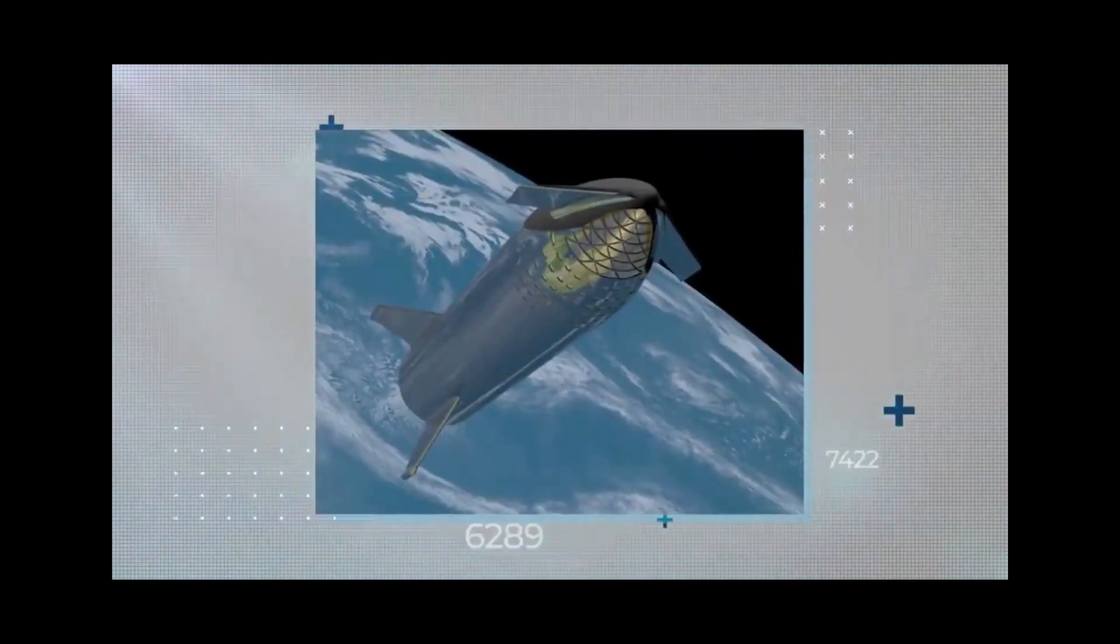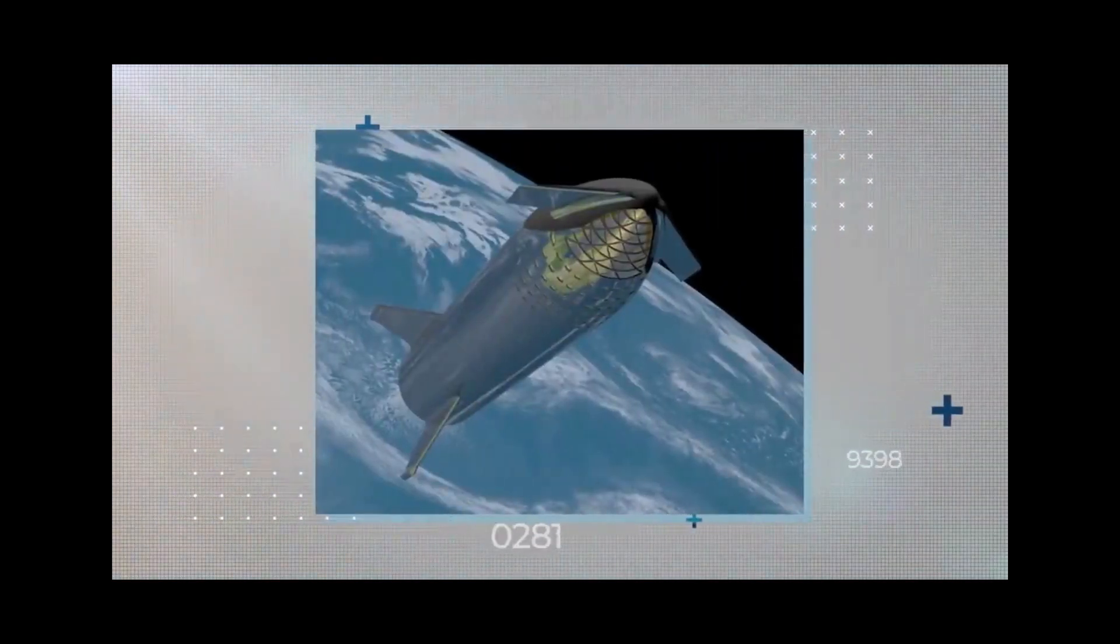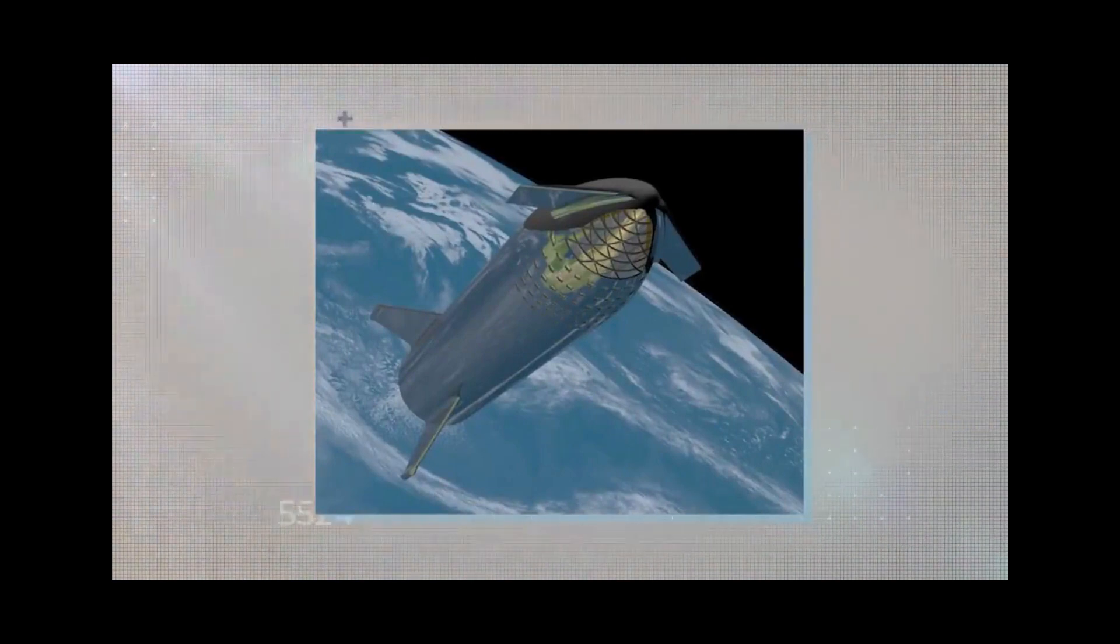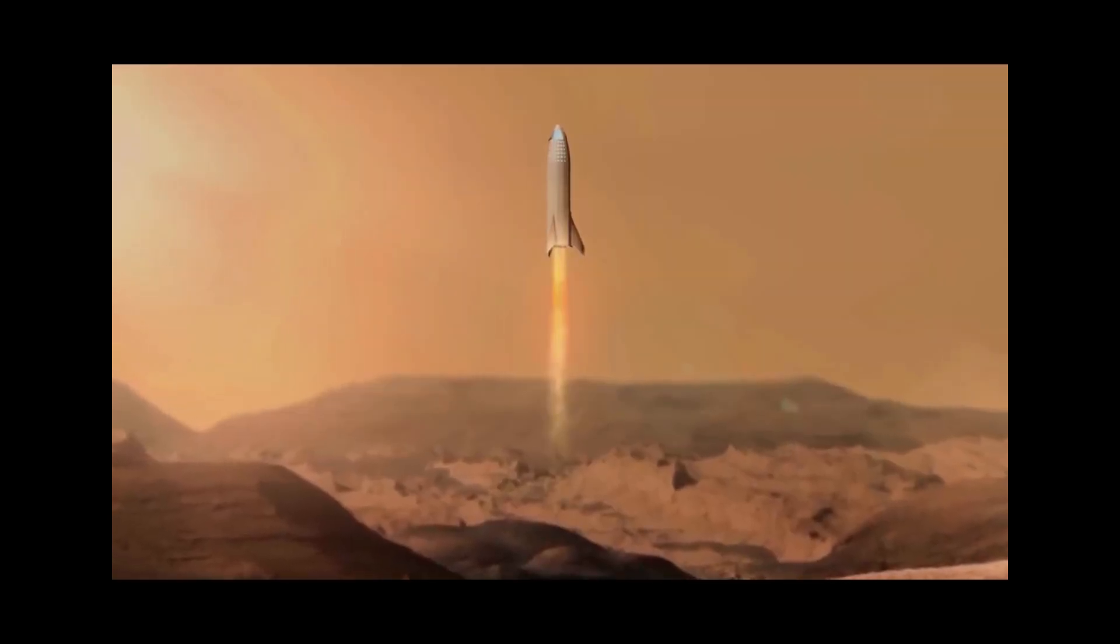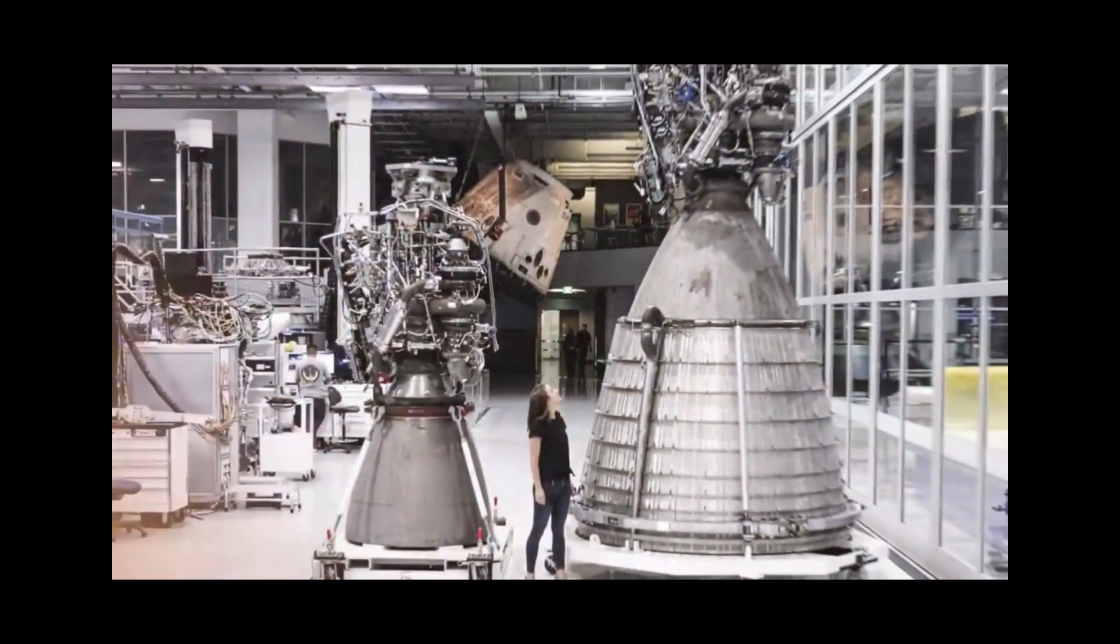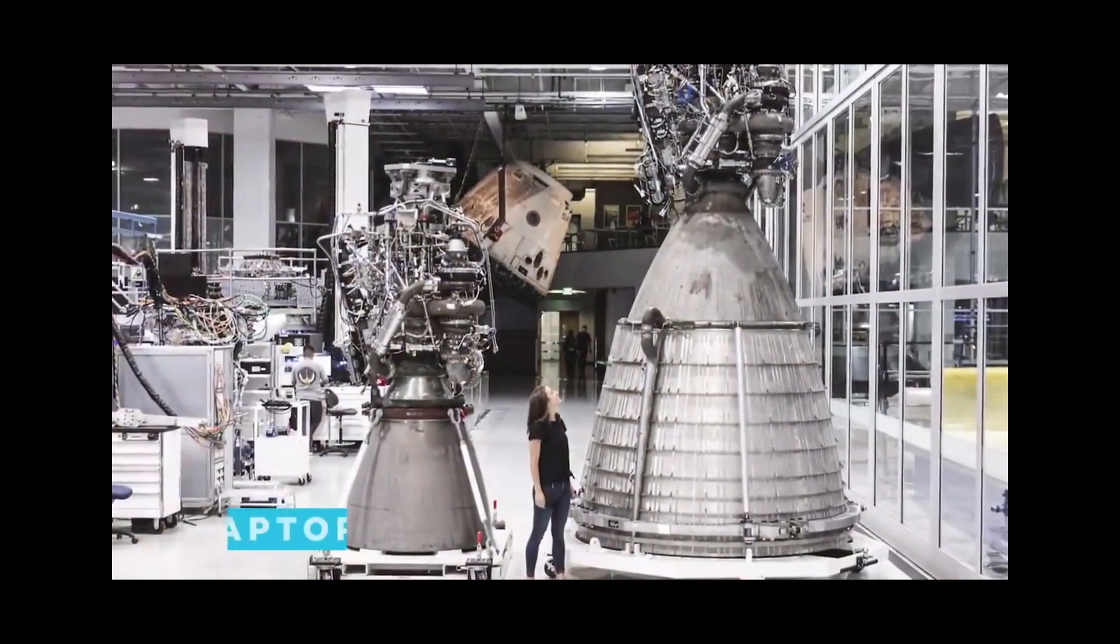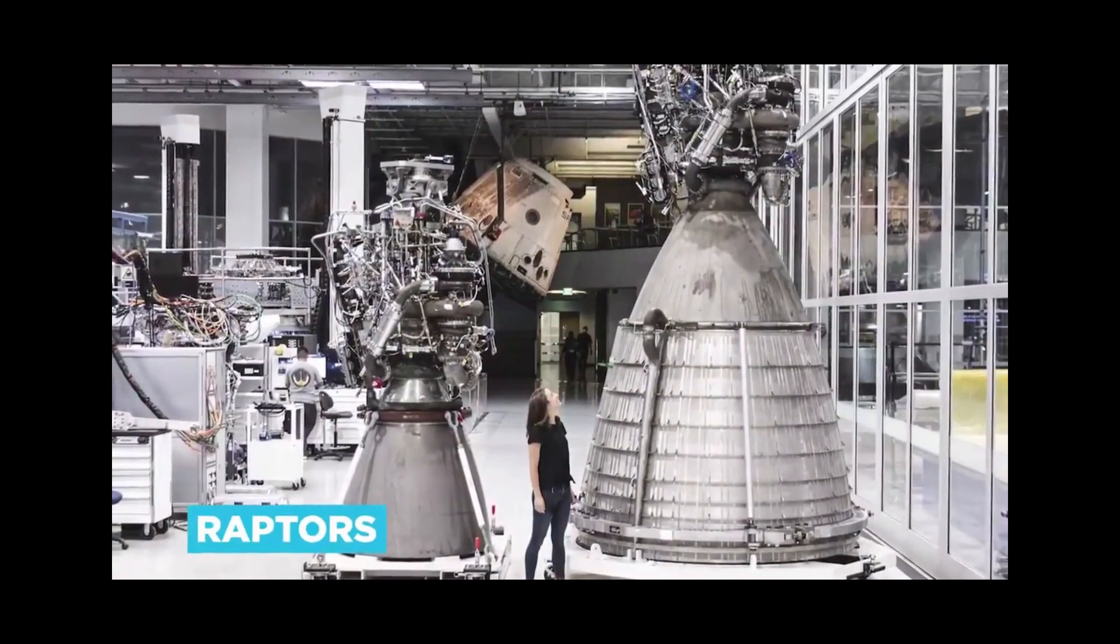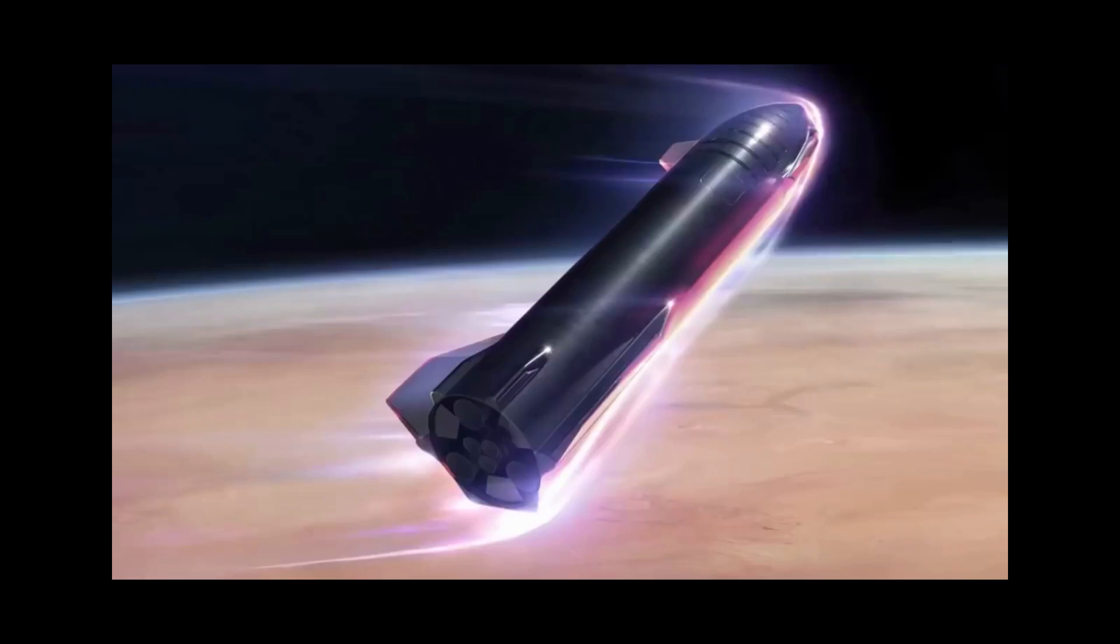The nose cone header tank holds a separate supply of liquid oxygen, and the Common Dome header tank contains its own stash of liquid methane. These reserves are only brought online during the final stage of landing, once the main fuel supplies in the big tanks have been exhausted. In this way, Starship's thirsty Raptor engines can enjoy fresh, high-pressure methane when they most need it. This pressure is so crucial for their operation.